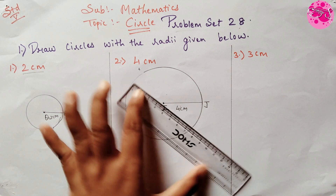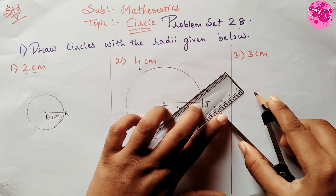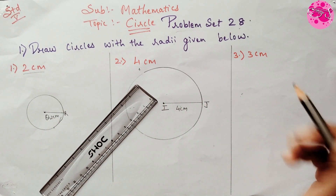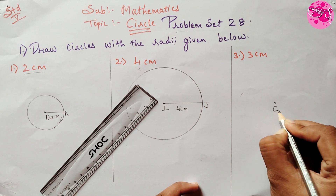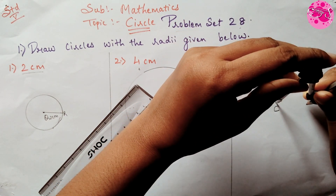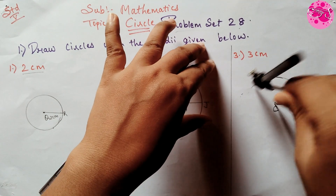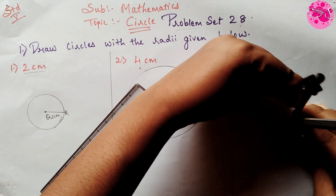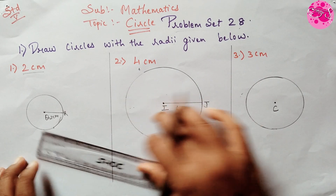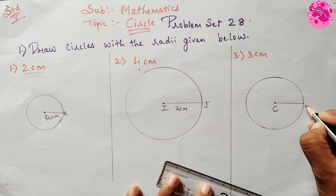The third one is 3 cm. To draw a circle with radius 3 cm, take a ruler and set the compass to 3 cm. Then take a point C on the paper, place the metal point end on it, and turn the pencil around it to get the circle. Draw the line from the center to the end of the circle and write down 3 cm.